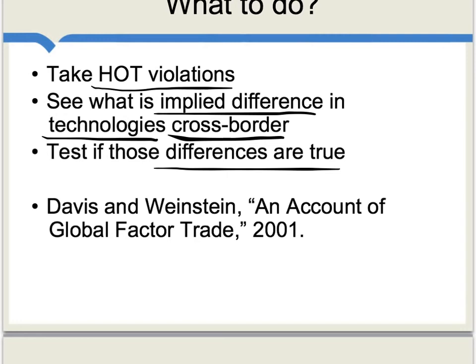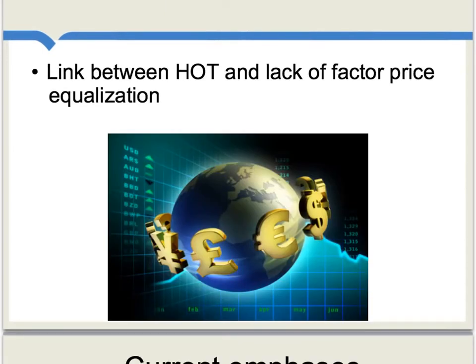This point about technology differences directs our attention to a fundamental link between the Heckscher-Ohlin theorem and the lack of factor price equalization across borders — that is, returns to capital and returns to labor do not equalize across rich and poor countries. This too is partly because countries have different technologies, or even different cultures — and in this regard, culture can be thought of as a technology. There is a fundamental factor, some kind of differences across countries, which prevents perfect factor price equalization and prevents the Heckscher-Ohlin theorem from holding. Both literatures are getting at the same basic question: how and why are countries different, and how do those differences inhibit trade?